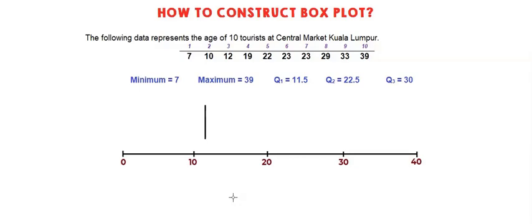Then you draw a vertical line for Q2. So Q2 is 22.5, and here is my 22.5. Last vertical line for Q3 which is 30. So here is Q3.